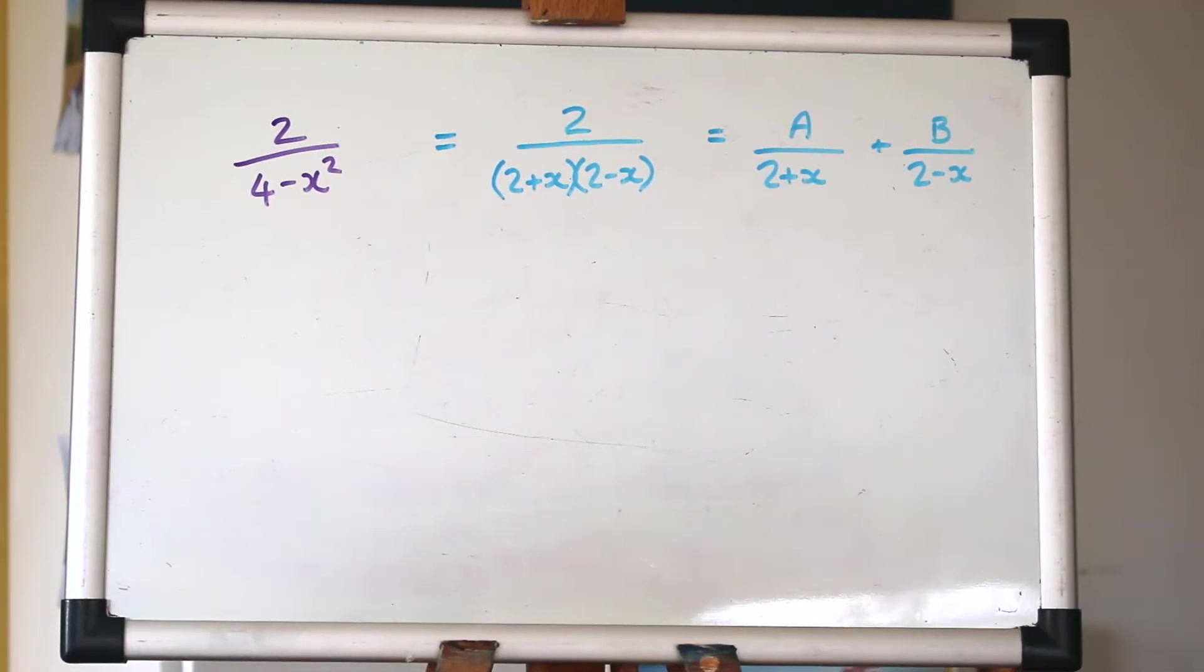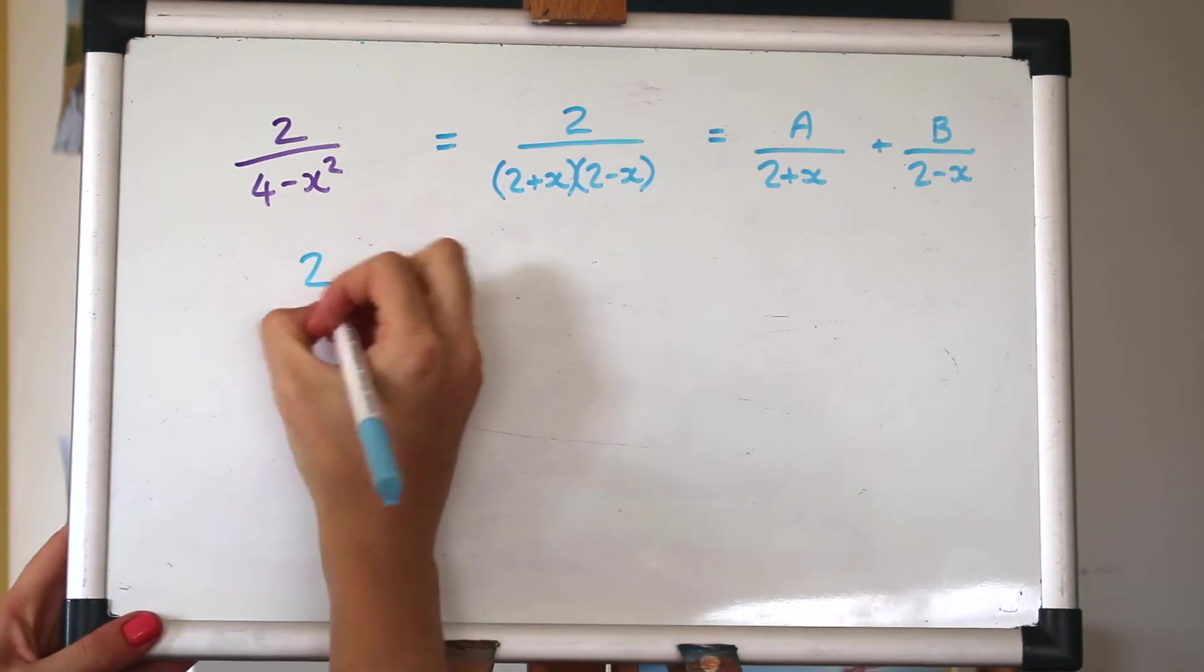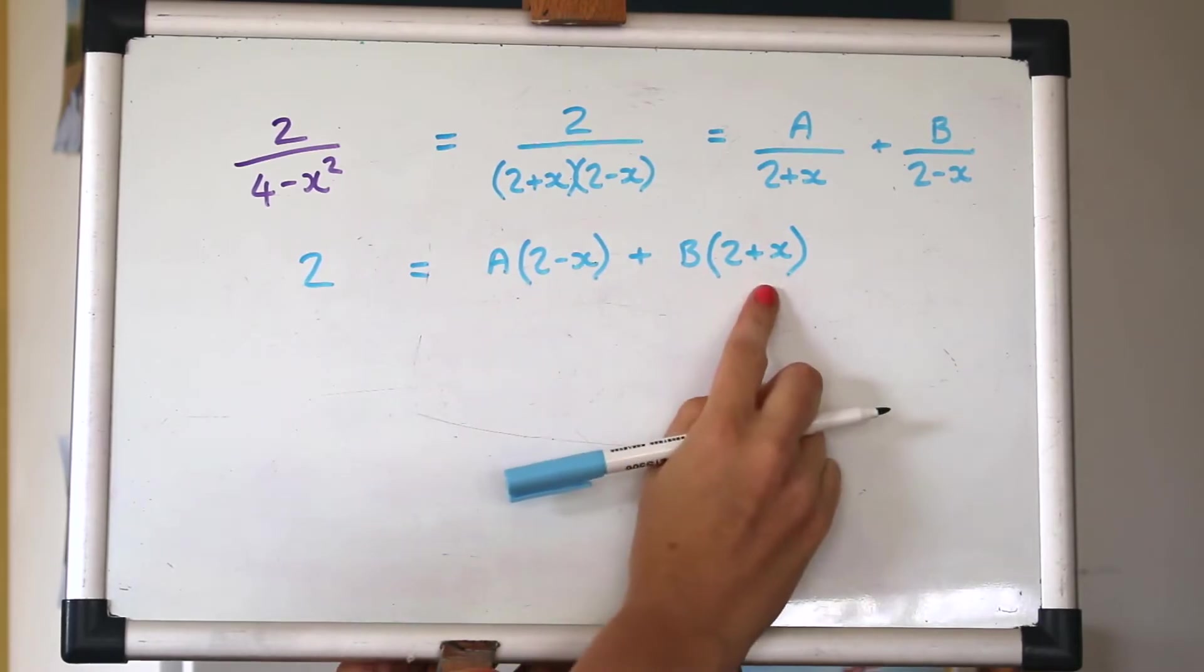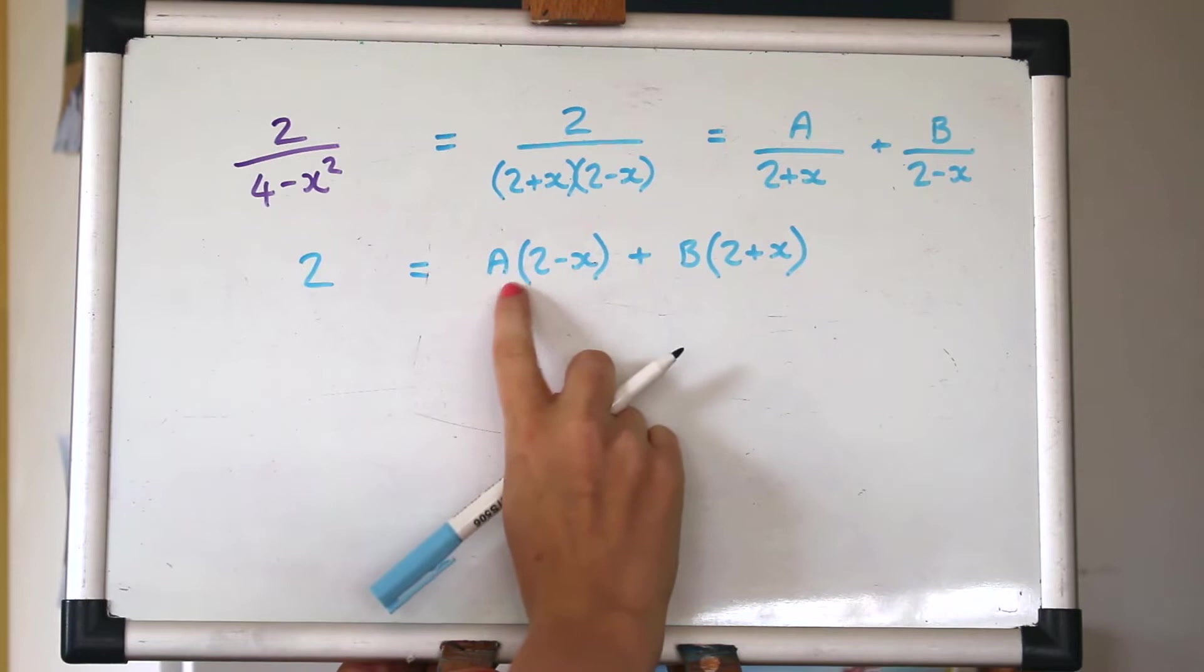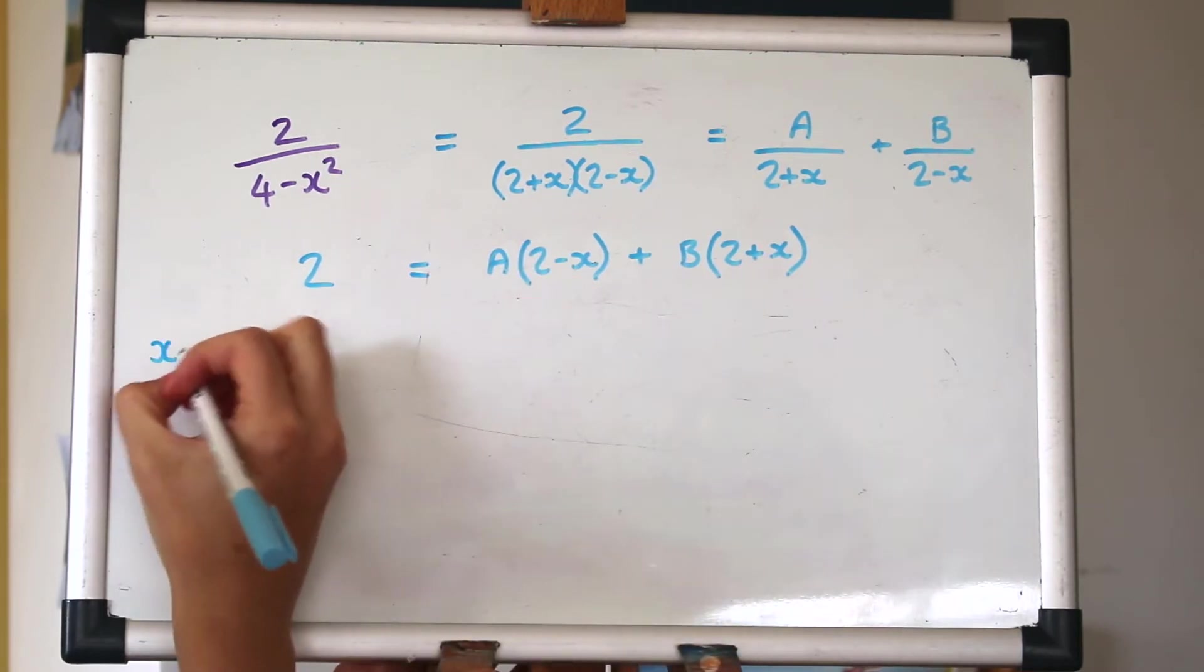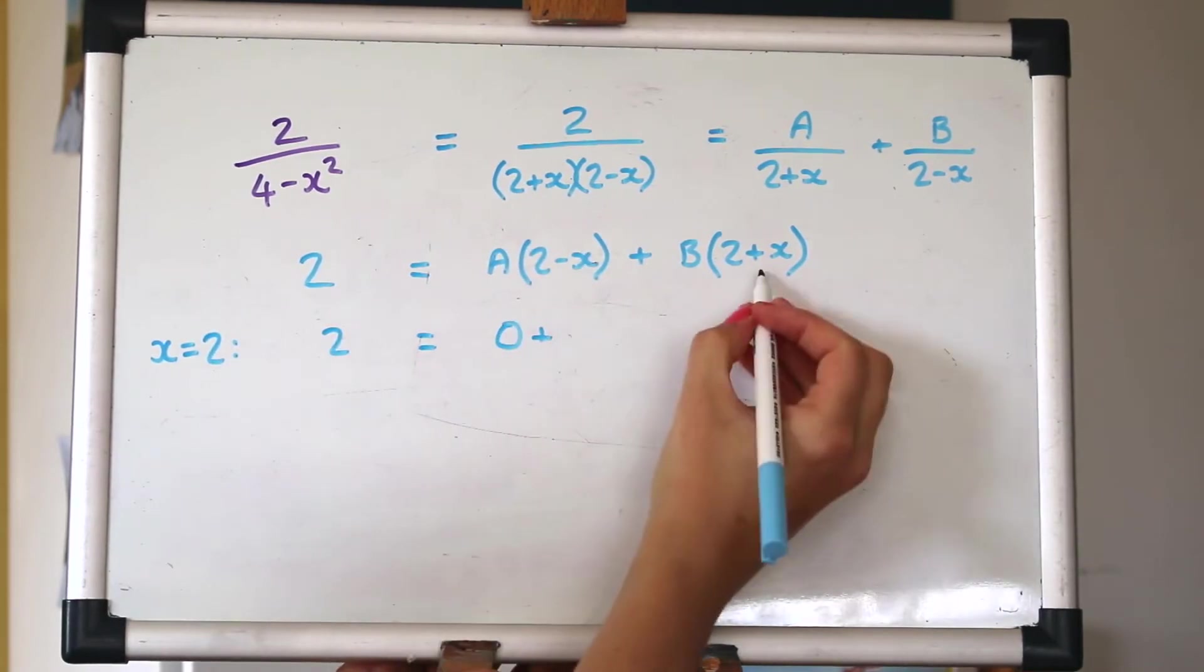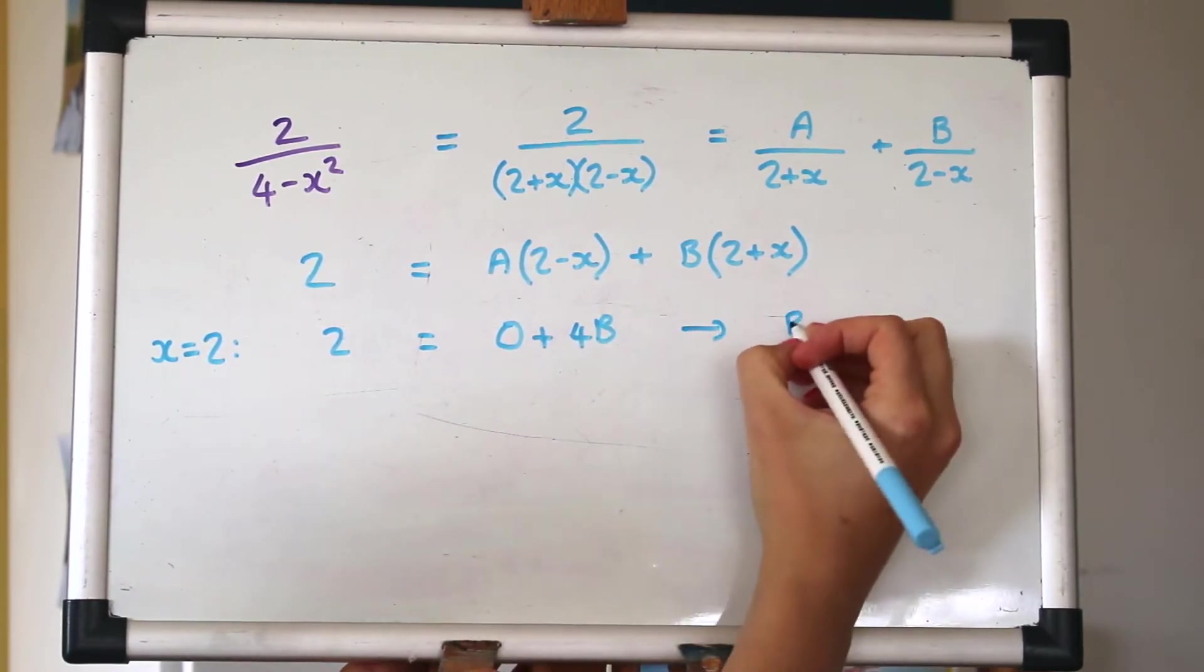And again, like the previous example, I'm going to multiply by the whole denominator. Like I said, I've just skipped a step here. Hopefully you're okay with that. If you need to do it more slowly, do. But you'll be left with those bits there. Let's choose some values of x. If I make x 2, then that will get rid of that one. And then I'll have 4b. So that gives me that b is a half.